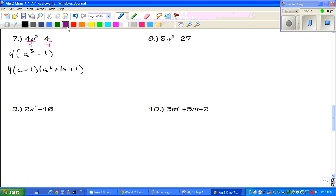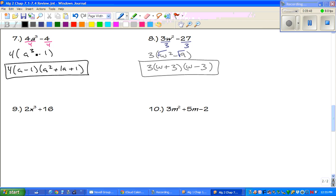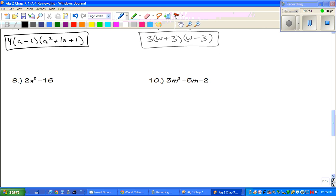Number 8. Always ask yourself, is there a GCF? And we can take out a 3. So, the 3 comes out front, and it's w squared minus 9. And now this is the difference of two squares. Or two squares, I'm sorry. And the square root of 9 is 3. Oh, and I forgot to put a box on my final answer on number 7. I'm sorry, guys. I'm slacking today.